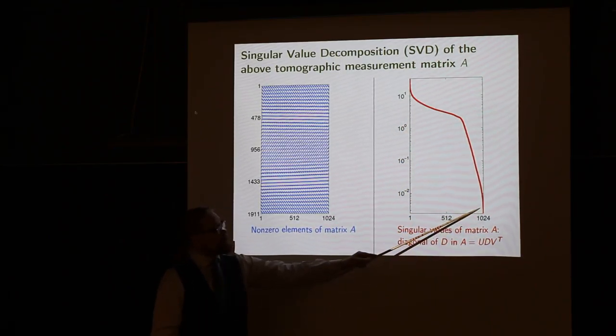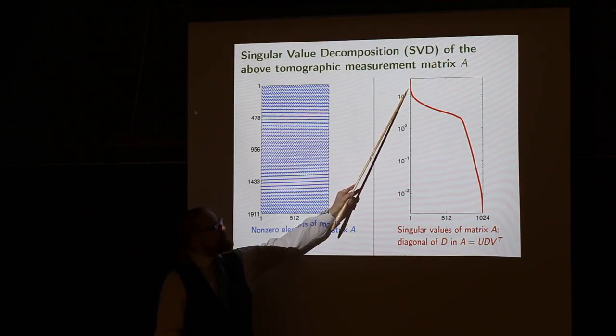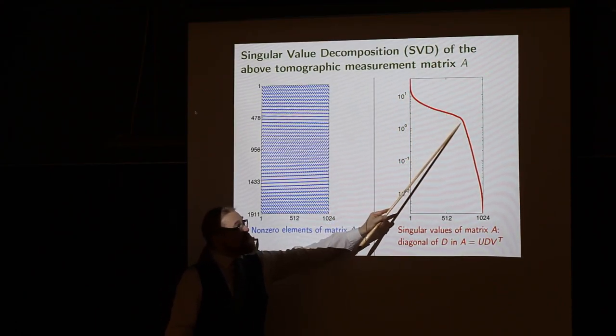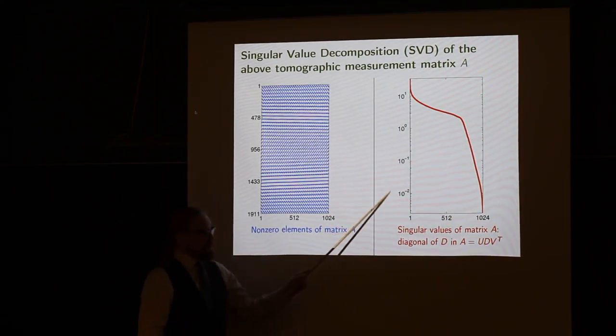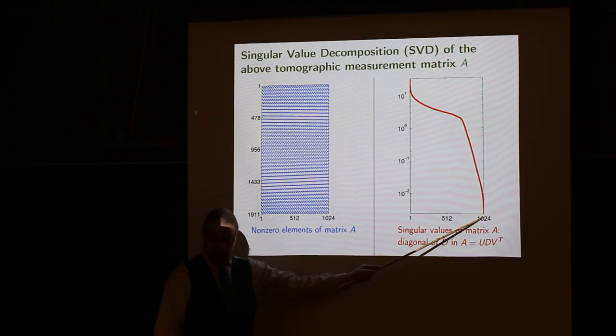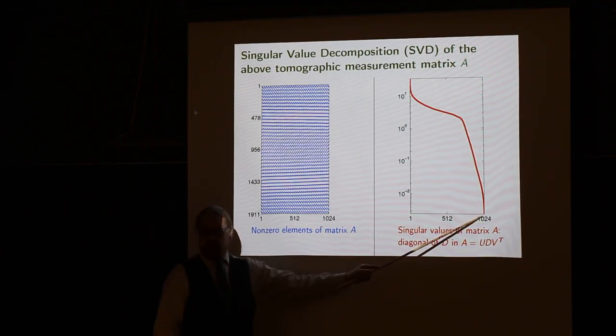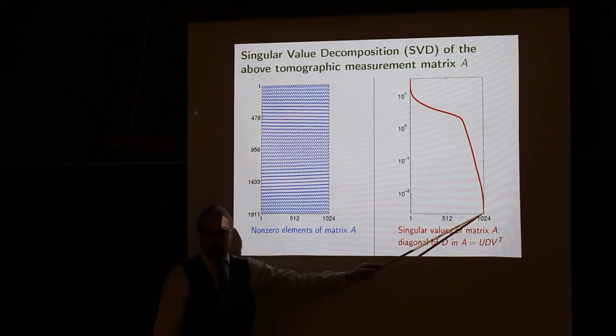So for this particular matrix you see we have the hallmark of ill-posedness. The singular values are kind of smoothly dropping to zero in a logarithmic scale, never really dropping exactly to zero, so there is no kernel for the matrix. The matrix is invertible because even the smallest singular value is positive.